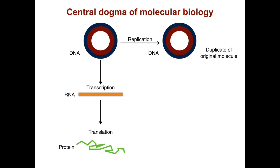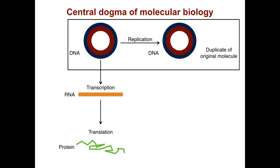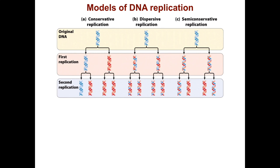The central dogma of molecular biology is a concept we've discussed multiple times. DNA is the repository of genetic information. That genetic information is expressed during the transcription of RNA and the translation of RNA into protein. It is essential that DNA is replicated properly. After the discovery of the structure of DNA, different models of DNA replication were proposed.